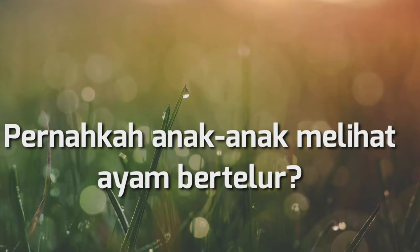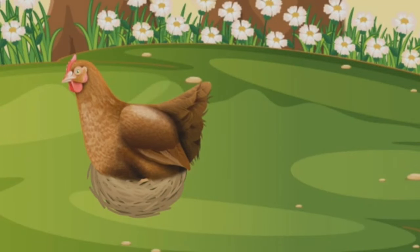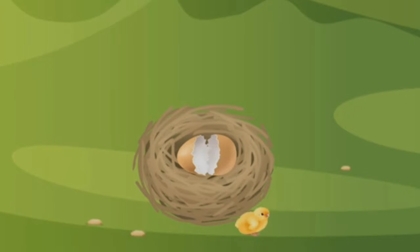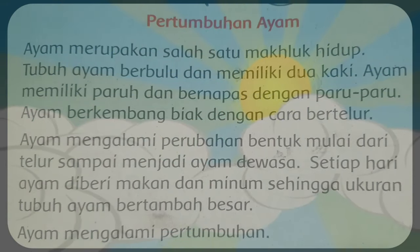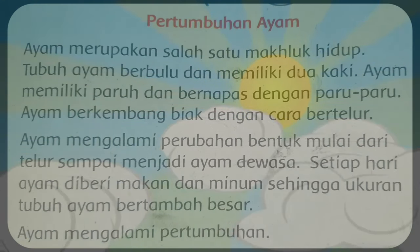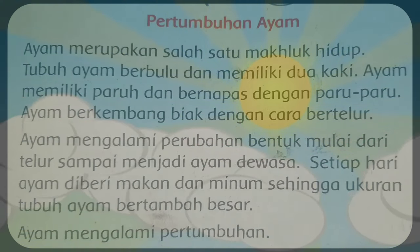Pernahkah anak-anak melihat ayam bertelur? Pertumbuhan ayam. Ayam merupakan salah satu makhluk hidup. Tubuh ayam berbulu dan memiliki dua kaki. Ayam memiliki paru-paru dan bernafas dengan paru-paru. Ayam berkembang biak dengan cara bertelur. Ayam mengalami perubahan mulai dari telur sampai menjadi ayam dewasa. Setiap hari ayam diberi makan dan minum sehingga ukuran tubuh ayam menjadi besar. Ayam mengalami pertumbuhan.